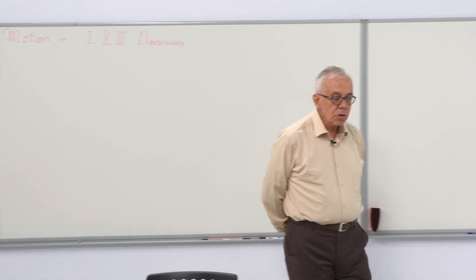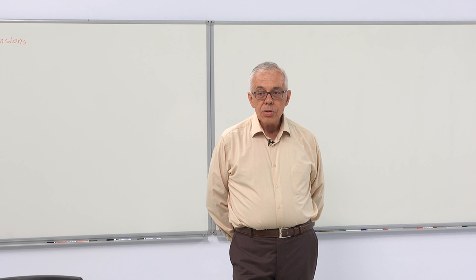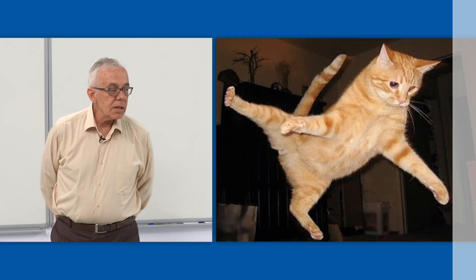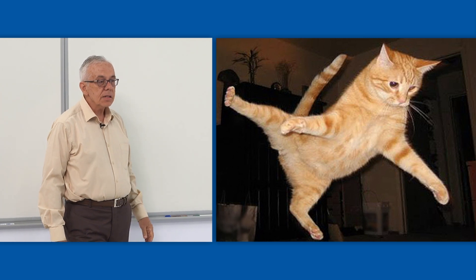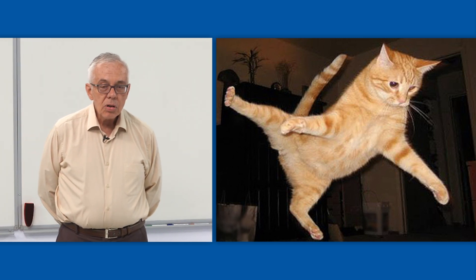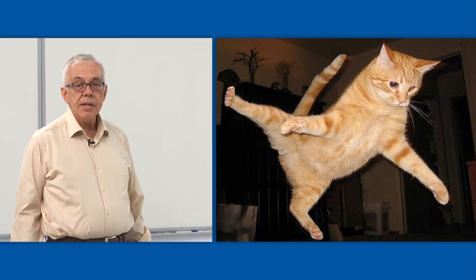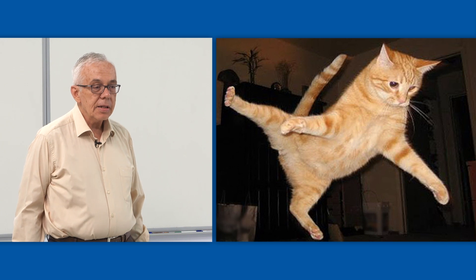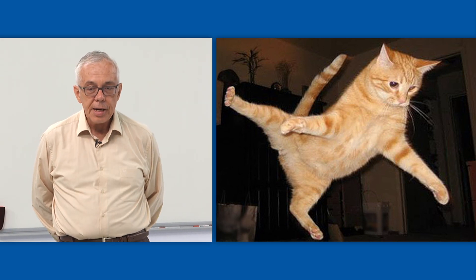When we are talking about motion, we can be talking about something very complicated, like the motion of the cat you see here. The legs and the tail and the head all move in different directions, while the cat is hurling itself through the air.